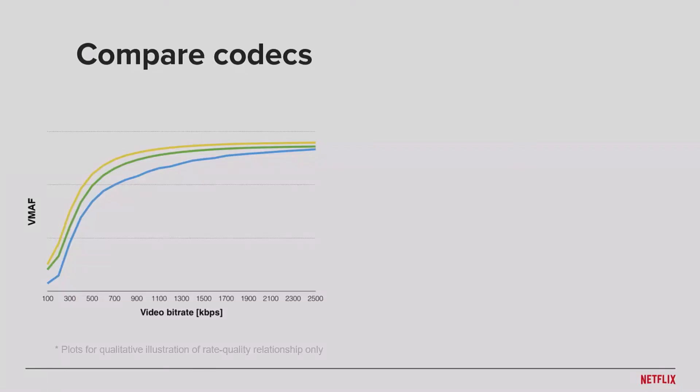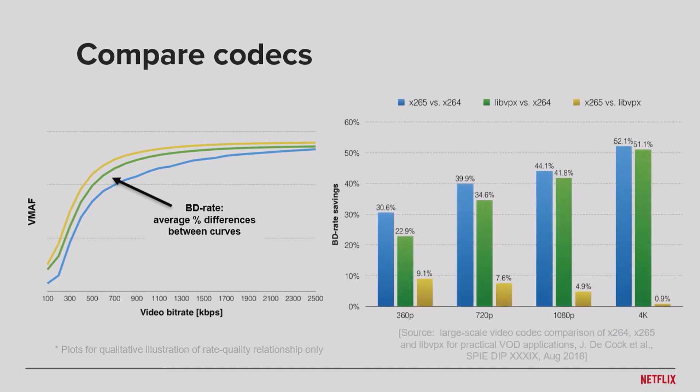Once we do that, we have all those curves. The next step is going to be a BD rate calculation, which is essentially the average percentage differences between those curves. So we average over the entire curve, and by doing that we can build this comparison diagram.